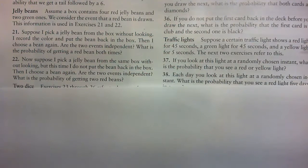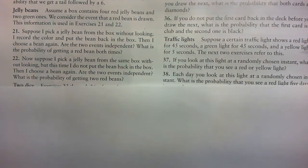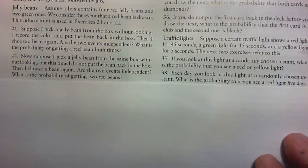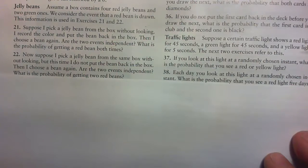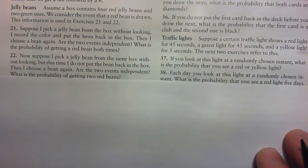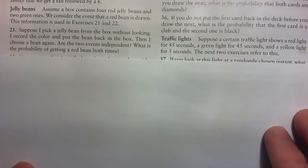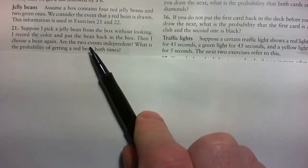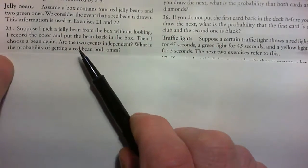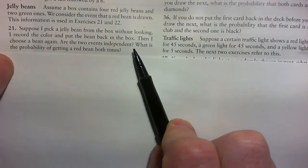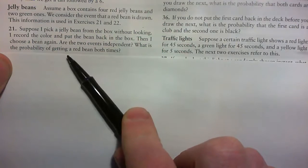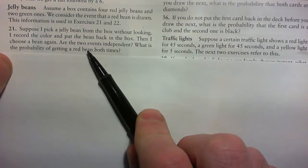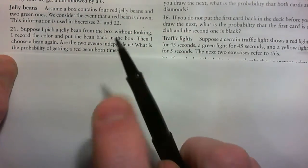In this video I'm going to do the jelly beans question. We assume a box contains four red jelly beans and two green. We consider the event that a red bean is drawn. Suppose I pick a jelly bean from the box without looking. I record the color and put the bean back in the box. Then I choose a bean again. Are the two events independent?